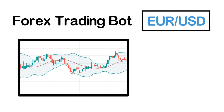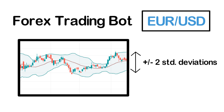The idea is that we expect the price to stay somewhere around its 20-day mean most of the time. In other words, we do not expect it to deviate from its 20-day moving average too much. However, if it does deviate by more than a certain amount, we take the opposite position and try to profit from the price moving back to its mean. To measure the degree of deviation, we use the standard deviation. If the price moves above its 20-day moving average by more than two standard deviations, we take a short position, and if it falls below its 20-day moving average by more than two standard deviations, we open a long position. In either case, we close the position once the price crosses its 20-day moving average.